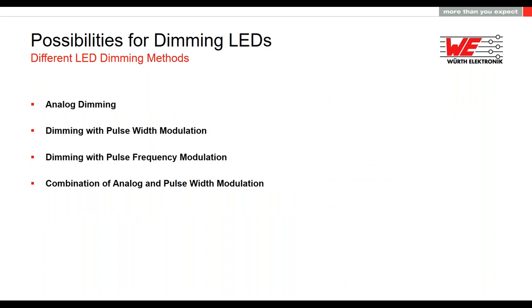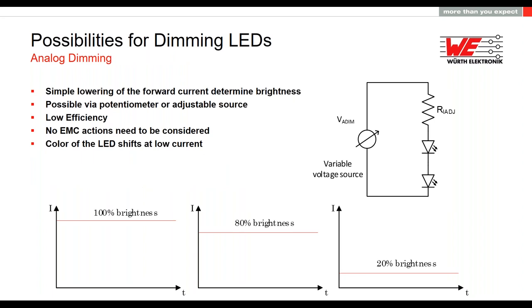Let's move on to the different dimming methods. There are analog dimming, dimming with pulse width modulation or pulse frequency modulation, and the combination of analog and PWM available. With analog dimming, the change in brightness is done by simply lowering the forward current through the LED. With 100% current we have 100% brightness, with 80% current 80% brightness, and with 20% the same. This can be done by a variable forward resistance, for example a potentiometer or an adjustable source, as shown in the schematic. Since we have a resistor here, the efficiency is quite low, but because no switching elements are used, no EMC measures need to be taken into account.